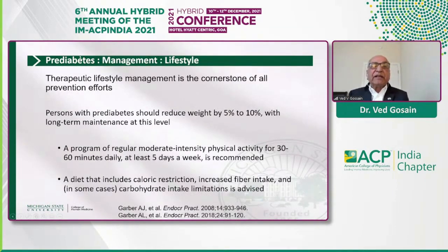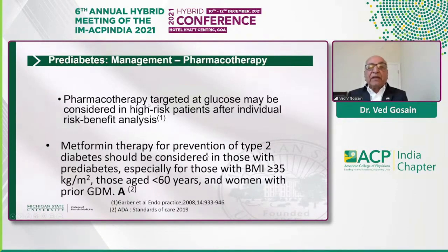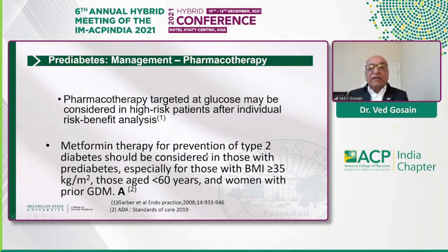Regarding management of prediabetes — lifestyle modifications of approximately 5% to 10% weight loss (7% is frequently quoted from the Diabetes Prevention Program) along with caloric restriction, increased fiber intake, and in some cases limited carbohydrate intake. Pharmacotherapy targeted at glucose can be considered for high-risk patients. The American Diabetes Association now mentions that metformin should be considered in those with prediabetes, especially those with a BMI over 35, those aged less than 60 years, and women with prior gestational diabetes.